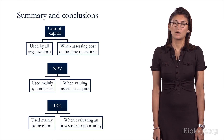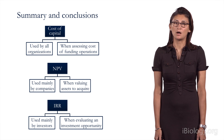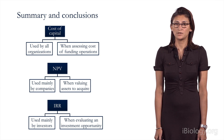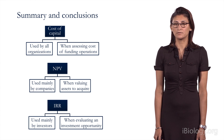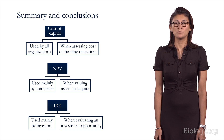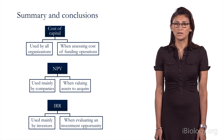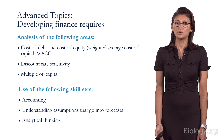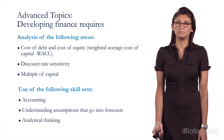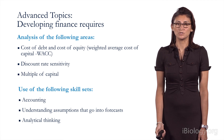In summary, the cost of capital is used by all organizations when assessing the cost of funding their operations. The NPV is used mainly by companies when valuing assets to acquire, and can also be used by equity research analysts when valuing companies and their future cash flows. The IRR is used mainly by investors when evaluating an investment opportunity. Here are some advanced topics to look into — for example, you could look into the discount rate and how it's calculated, as there are many mathematical equations and variables behind that.